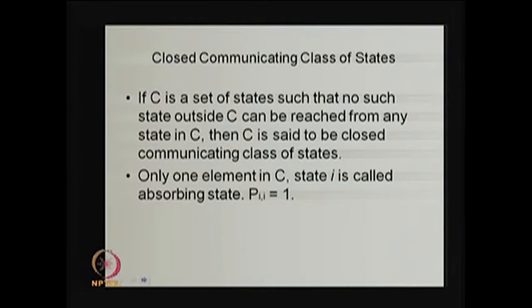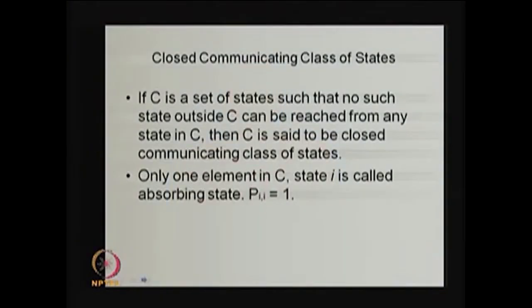If a set of states forms a closed communicating class and it has only one element — only one state — and you cannot include any more state to form a closed communicating class, then that state is called an absorbing state. There are two ways to have an absorbing state: either the one-step transition probability P(i,i) equals 1, or the closed communicating class has only one element.